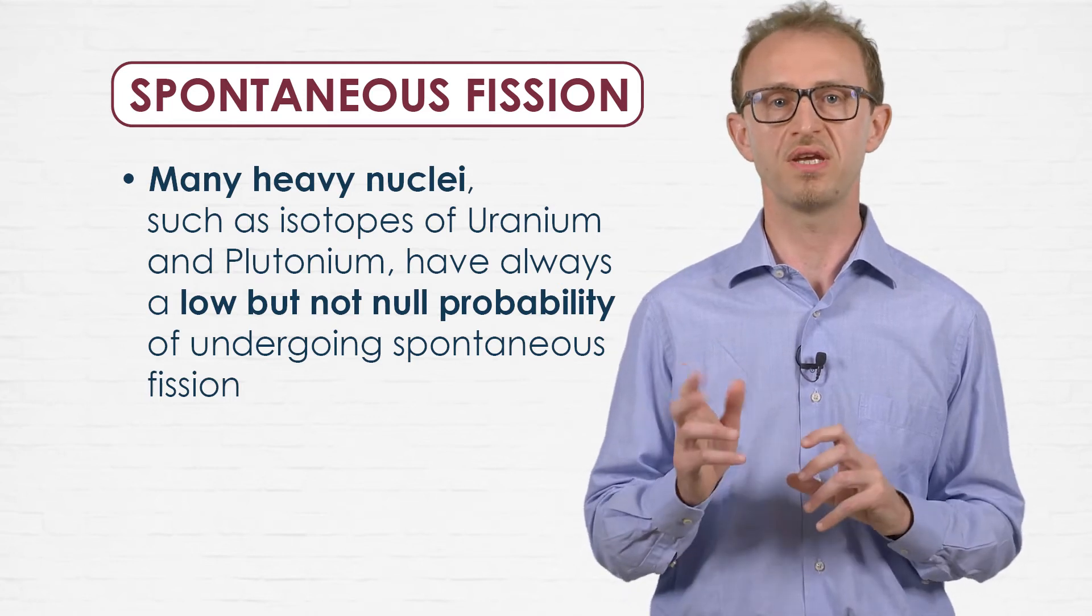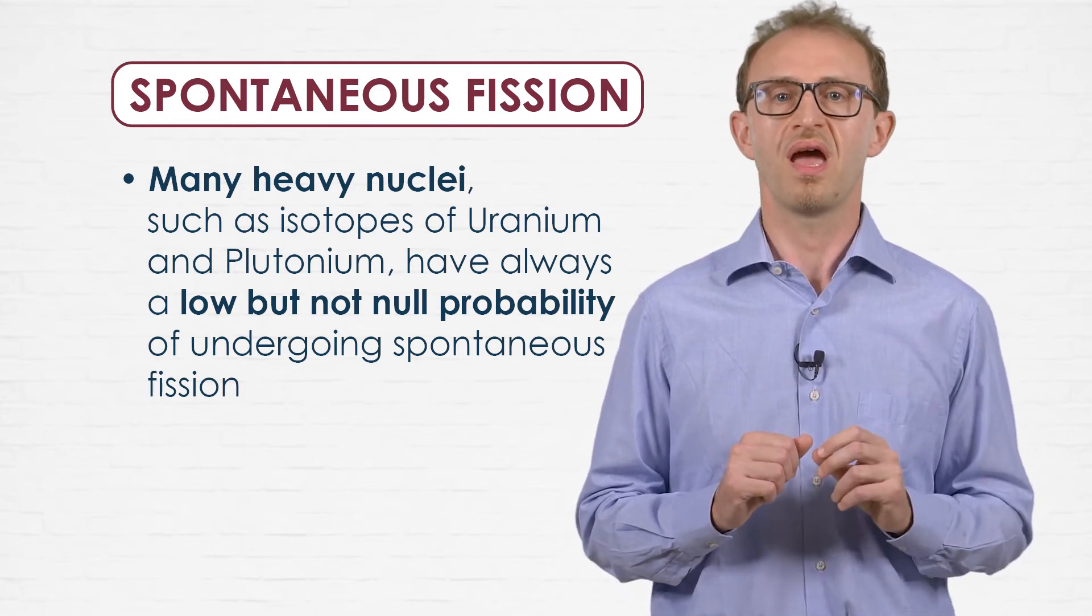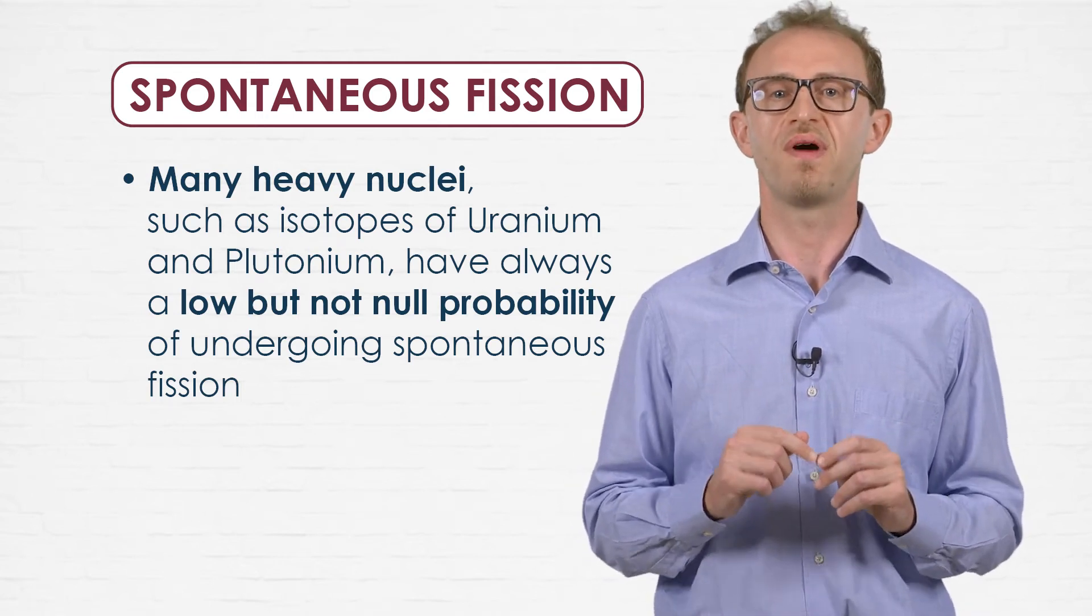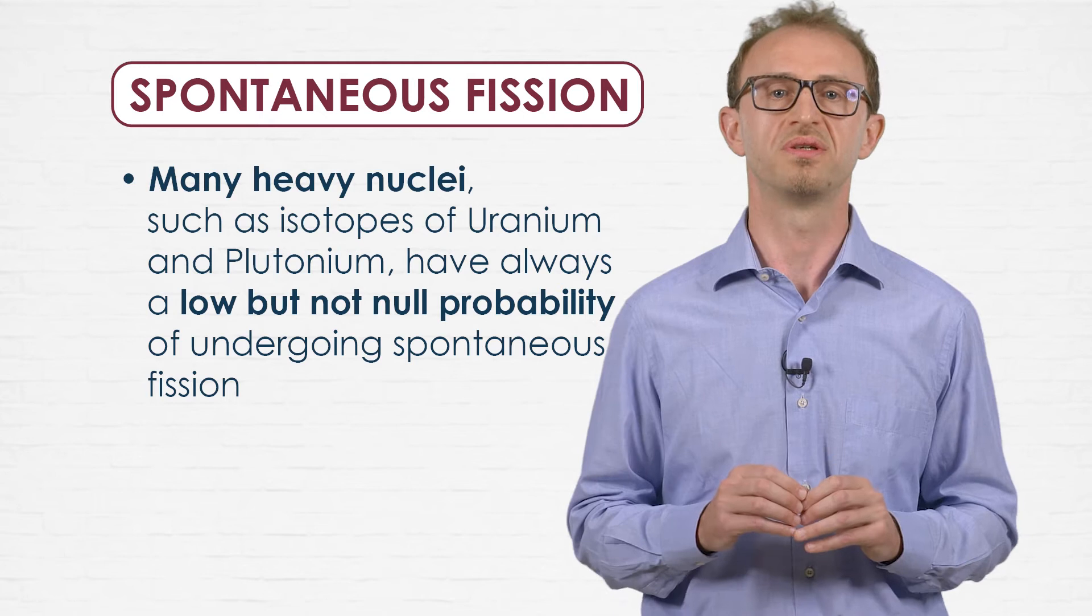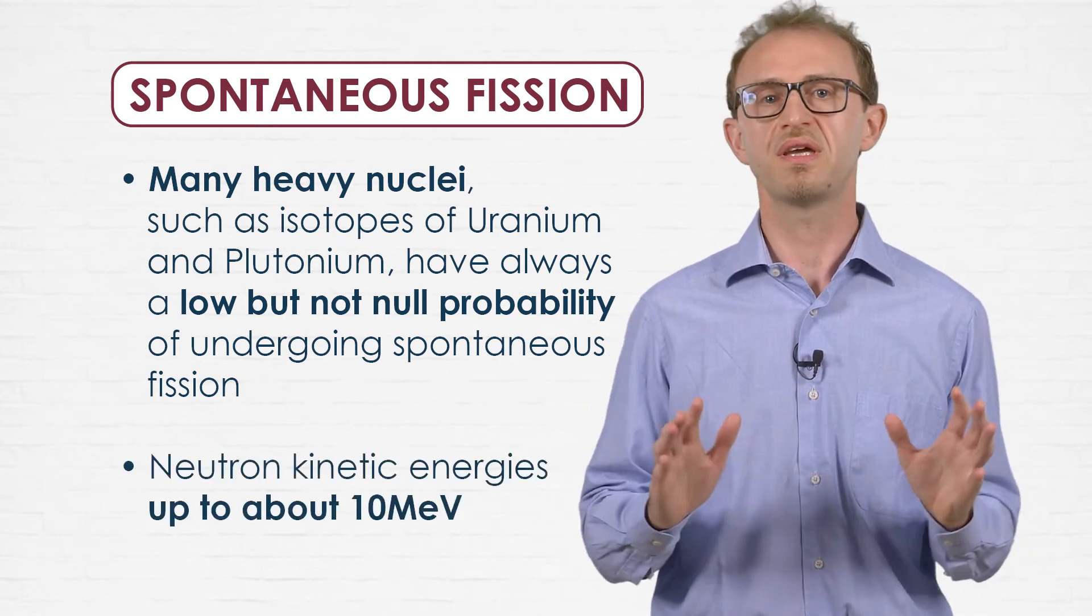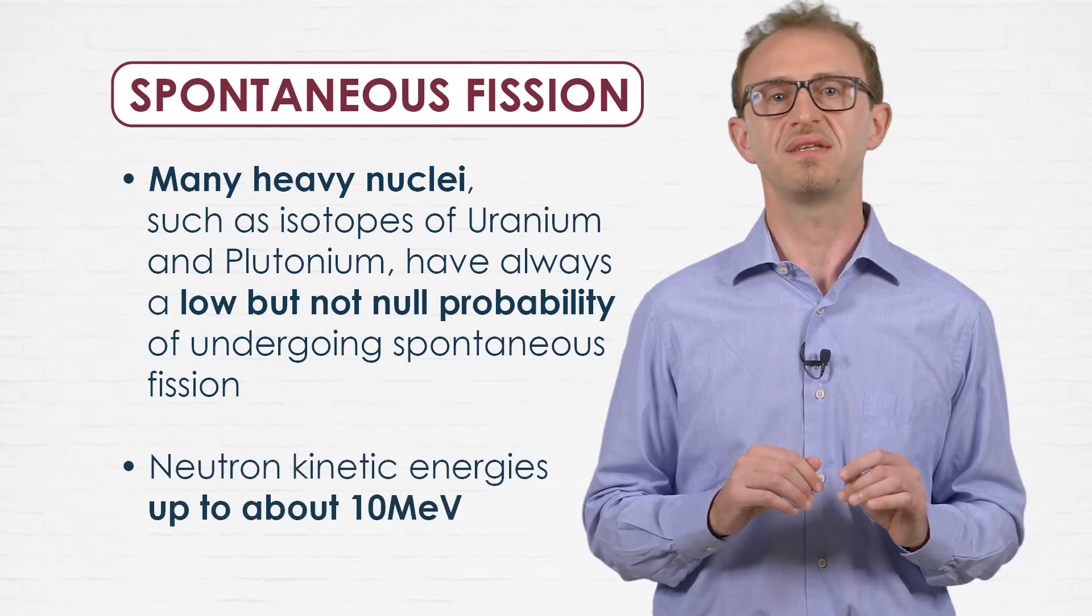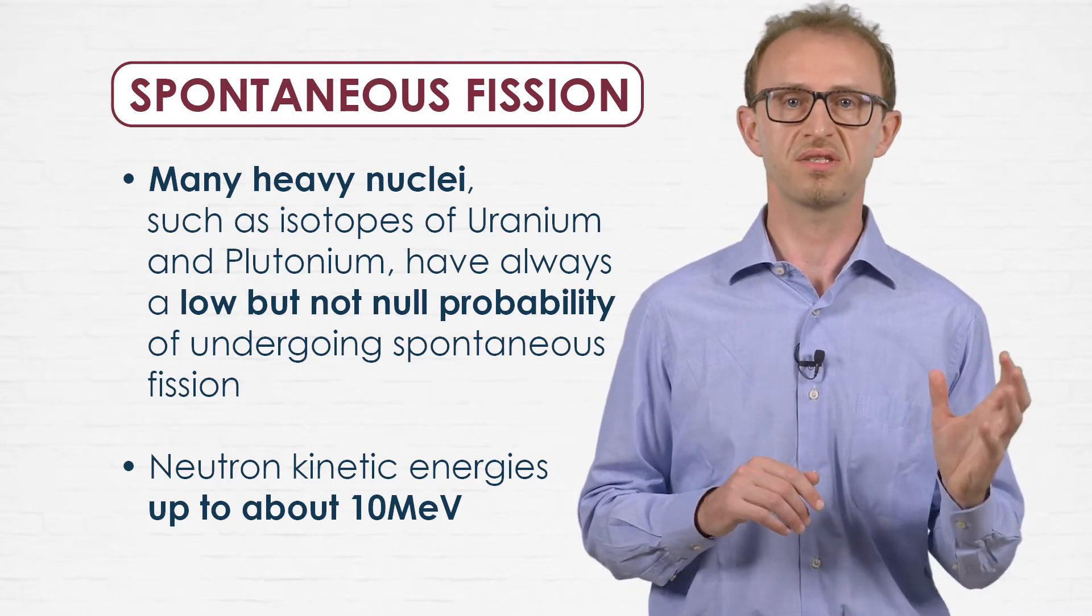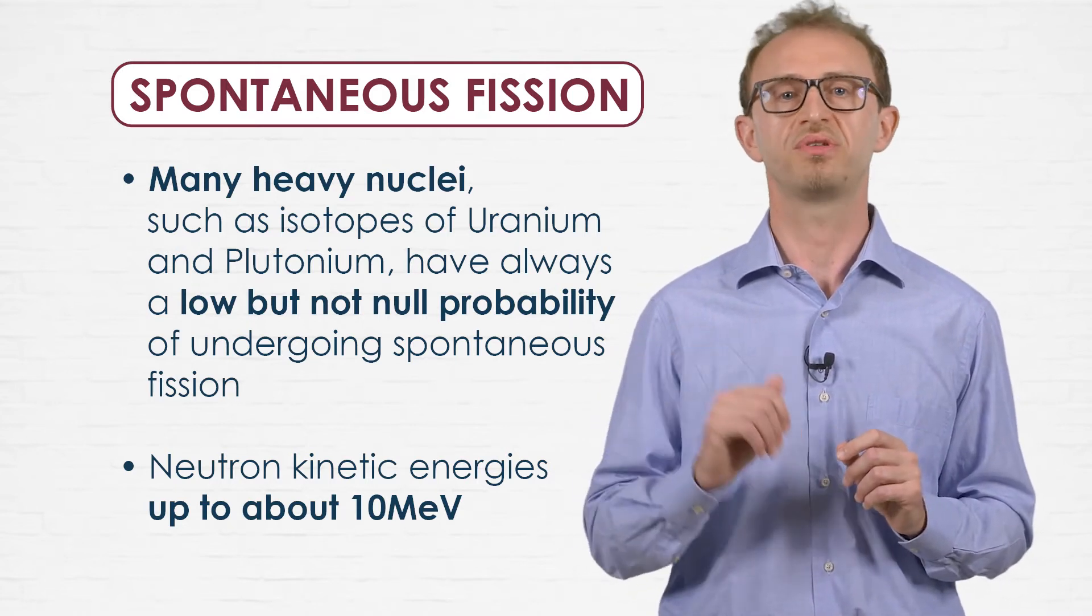that many heavy nuclei, such as isotopes of uranium and plutonium, have always a low but not zero probability of undergoing spontaneous fission. In all cases, the typical kinetic energies of fission neutrons range between tens of keV up to about 10 MeV.